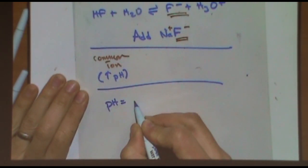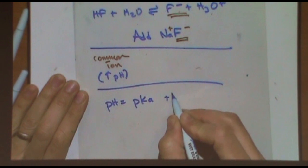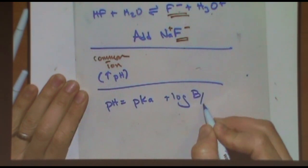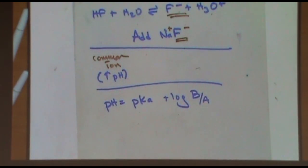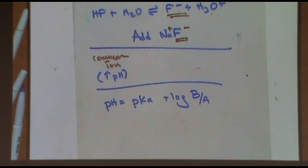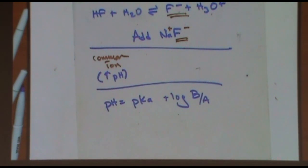To discuss buffers, we use an equation called the Henderson-Hasselbalch. It is a simplification of the ICE table — if you solve the ICE table you would end up with that equation. You need the pKa, which I would give you on the back of the exam.